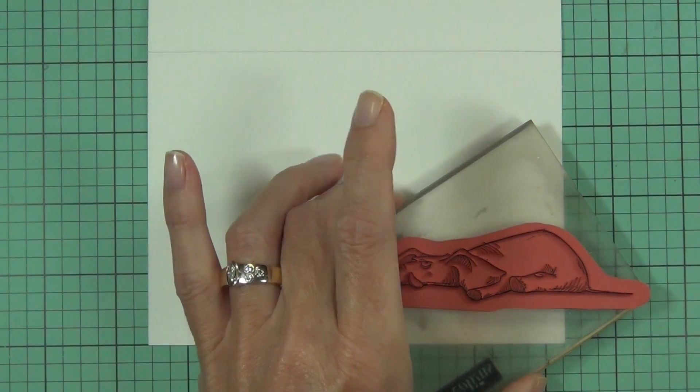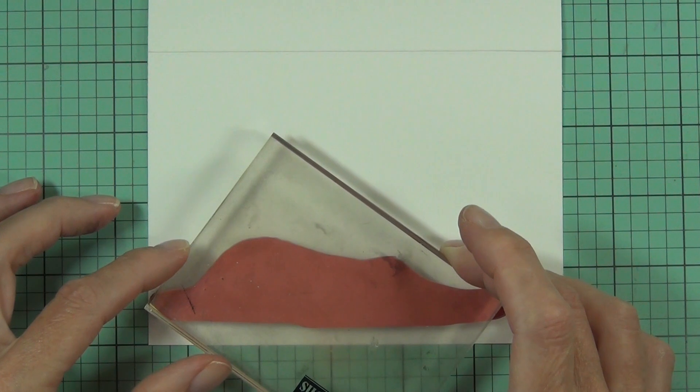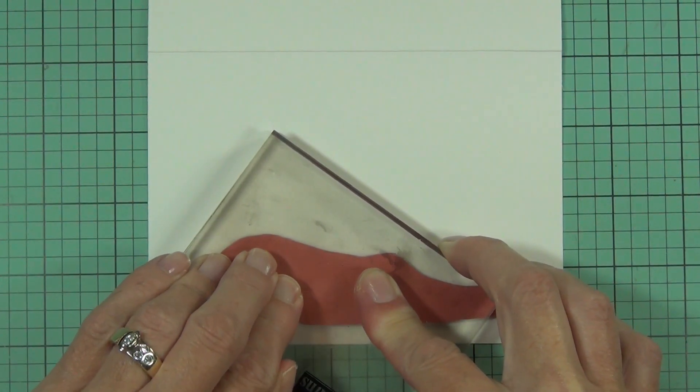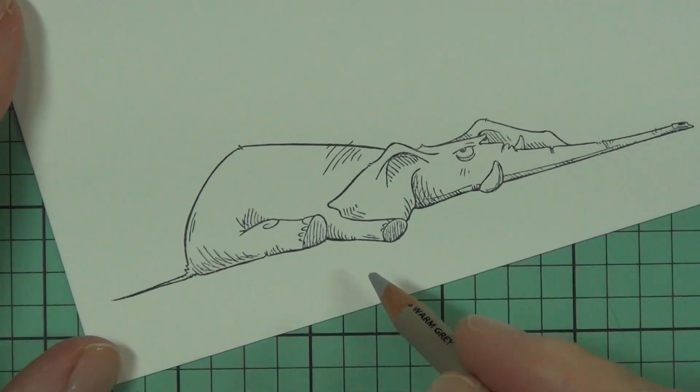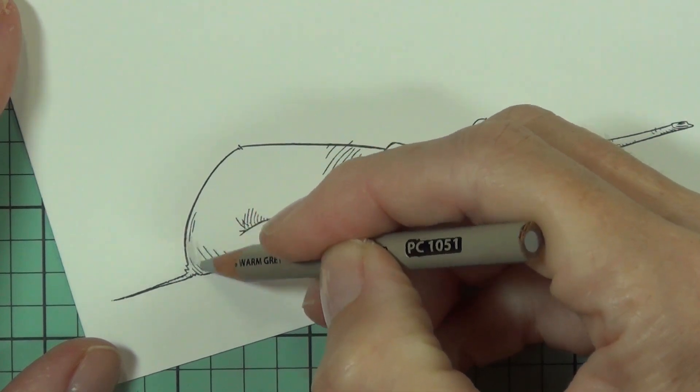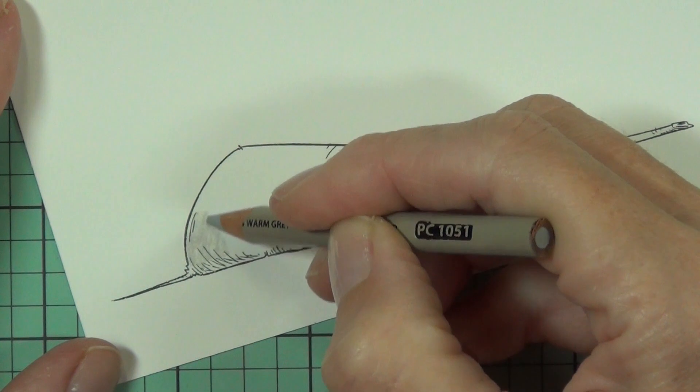directly on my card front. This is a top fold landscape card and I'm using Memento Tuxedo Black ink. This is a red rubber stamp and I have a clear block with Tack-N-Peel adhered to it permanently, so the red rubber stamp I can just pick it up and